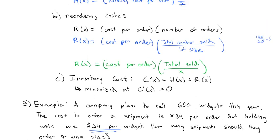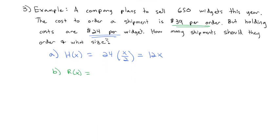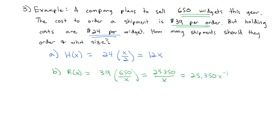The reordering cost equals the cost per order times the total sold divided by x. That's $39 times 650 divided by x, which gives us 25,350 over x, or 25,350x to the negative 1. Putting it all together, the total inventory cost is c(x) equals 12x plus 25,350x to the negative 1.